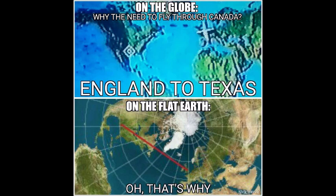Here's another one — England to Texas. Why is it stopping in Canada? I'll tell you why: because it's a flat earth. England to Texas should be a straight line, maybe stopping in Florida, but they're flying over Canada because on a flat earth that is a straight line. I don't know how many more times we have to make this point.